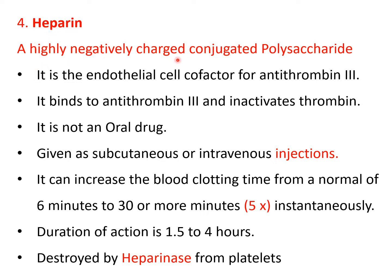Heparin is a highly negatively charged conjugated polysaccharide. It is the endothelial cell co-factor for anti-thrombin 3. Anti-thrombin 3 is an alpha globulin produced by the liver; it is present in the plasma. Mast cells present beneath the endothelial cells secrete heparin into the blood vessels, and this heparin binds to anti-thrombin 3. When it binds to anti-thrombin 3, the anti-thrombin 3 is highly activated and it inactivates thrombin, stopping the coagulation pathway.